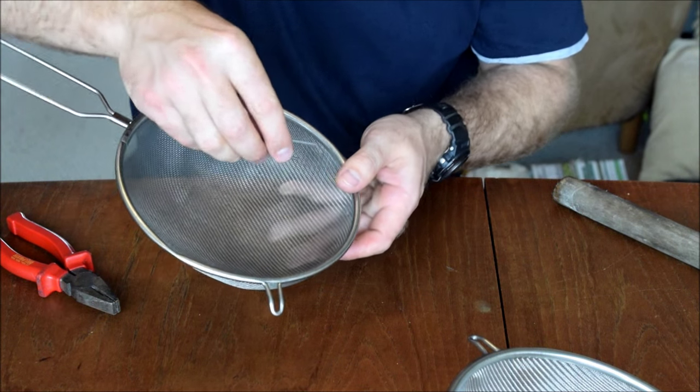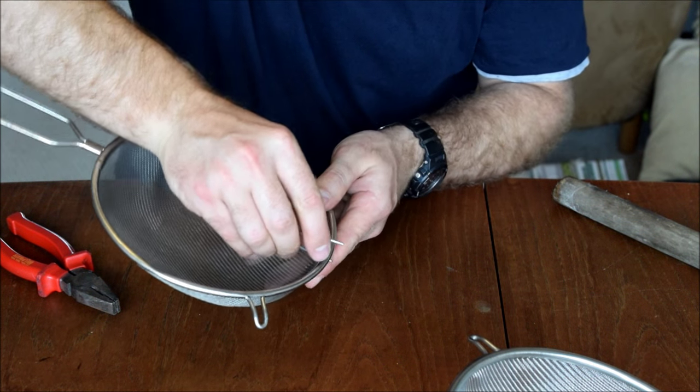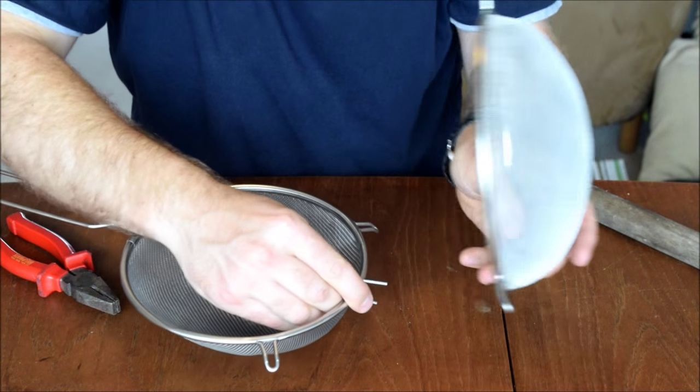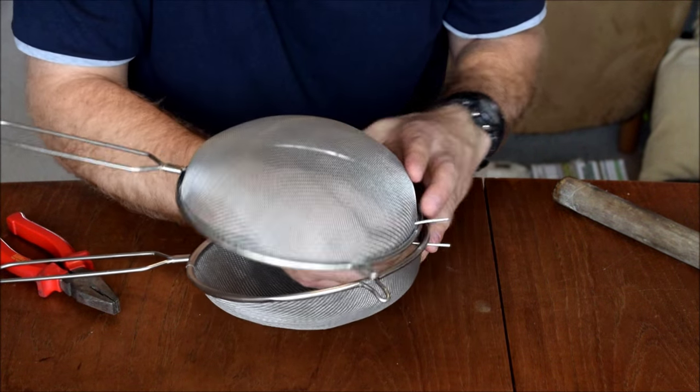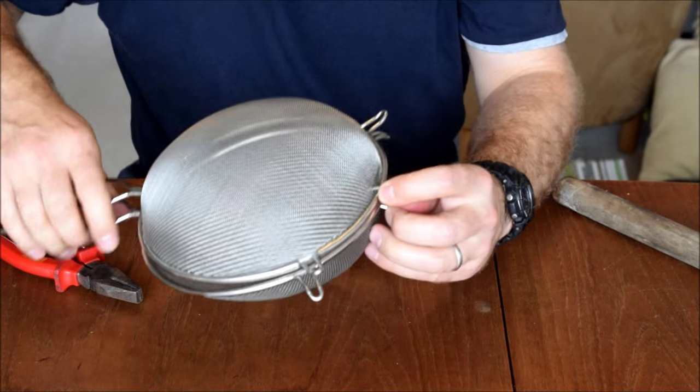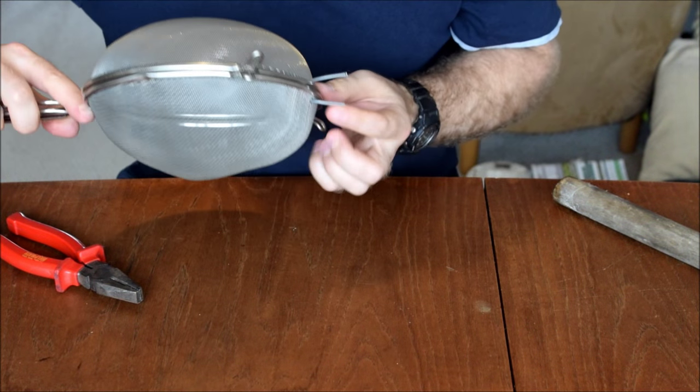Then thread it through the hole you've made in one sieve and through the hole you've made in the other sieve, so that it's poking out of the end like so.